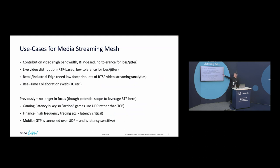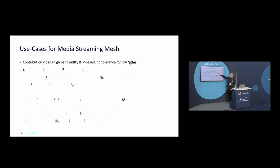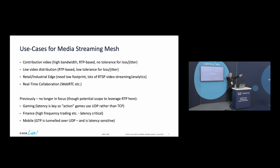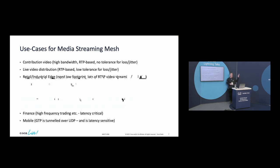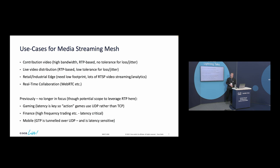Use cases: initially we're looking at anything real-time, but we focus on RTP, the real-time protocol. We're not looking at gaming and finance stock feeds, but things like contribution videos and live TV — how we distribute that video out to headends, caches, etc. Also the retail and industrial edge — things like cameras. At Cisco Live in Las Vegas, you walk into a casino and the number of cameras watching you is absolutely insane. There must be a machine learning infrastructure behind it. And then there's real-time collaboration — WebRTC, WebEx, Zoom, whatever.